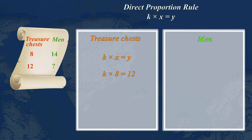K multiplied by 8 equals 12. Let's divide both sides of the equation by 8. On the left side, 8 divides by 8 to leave K by itself. On the right side, 12 divides by 8 to become 1.5.